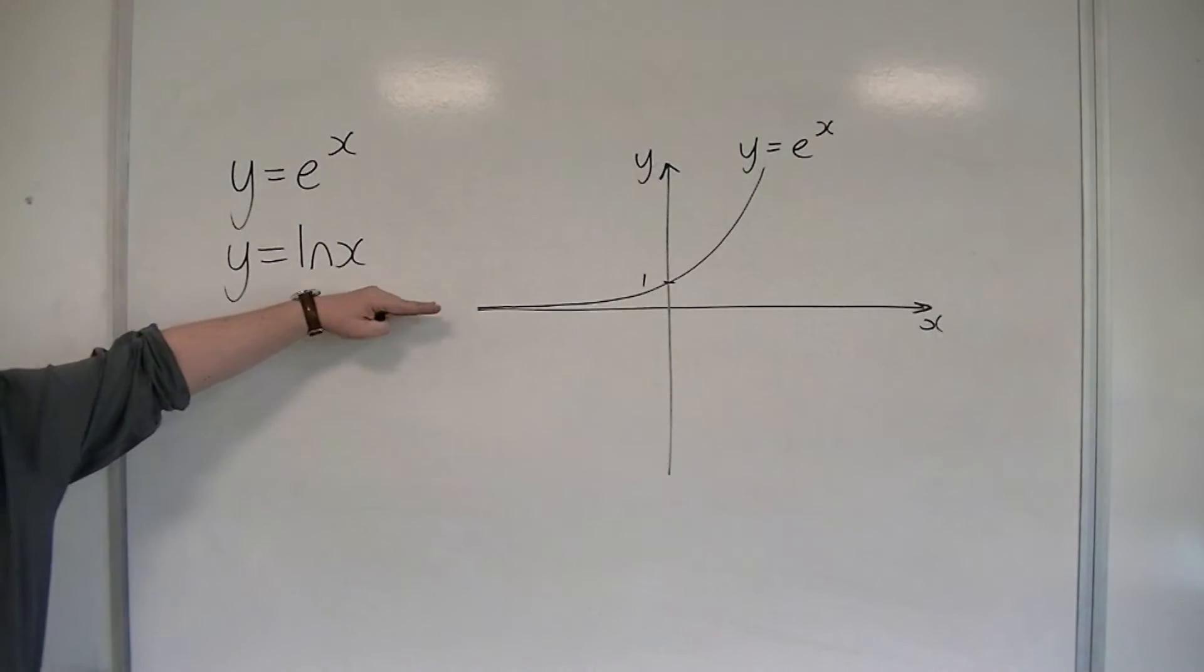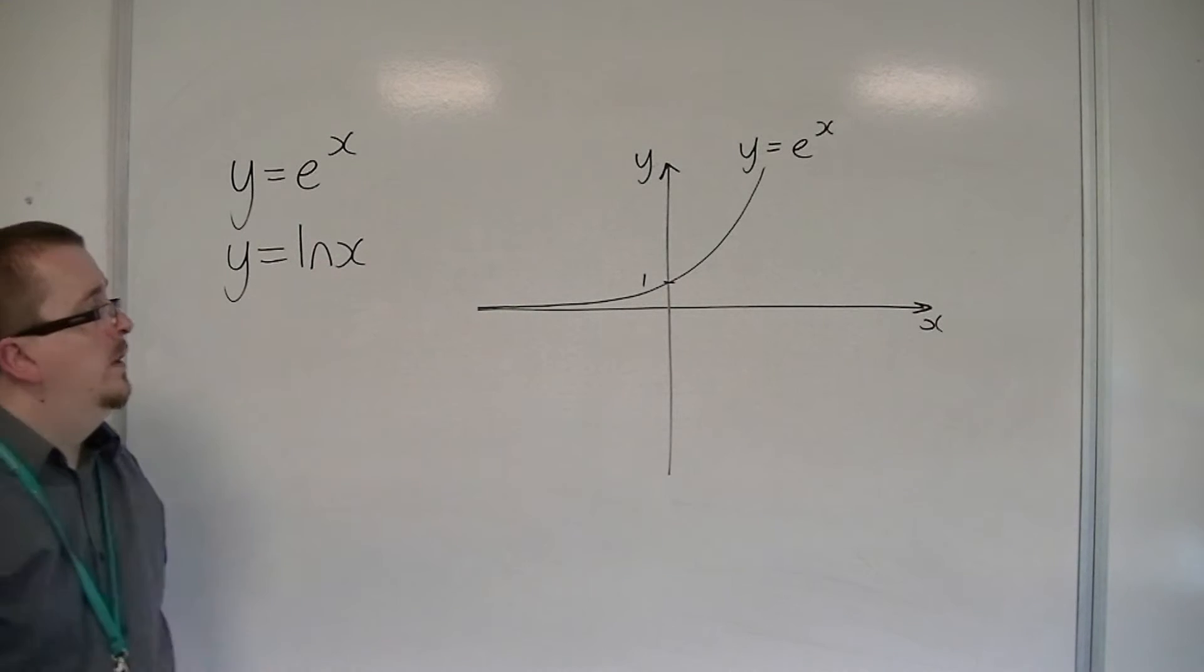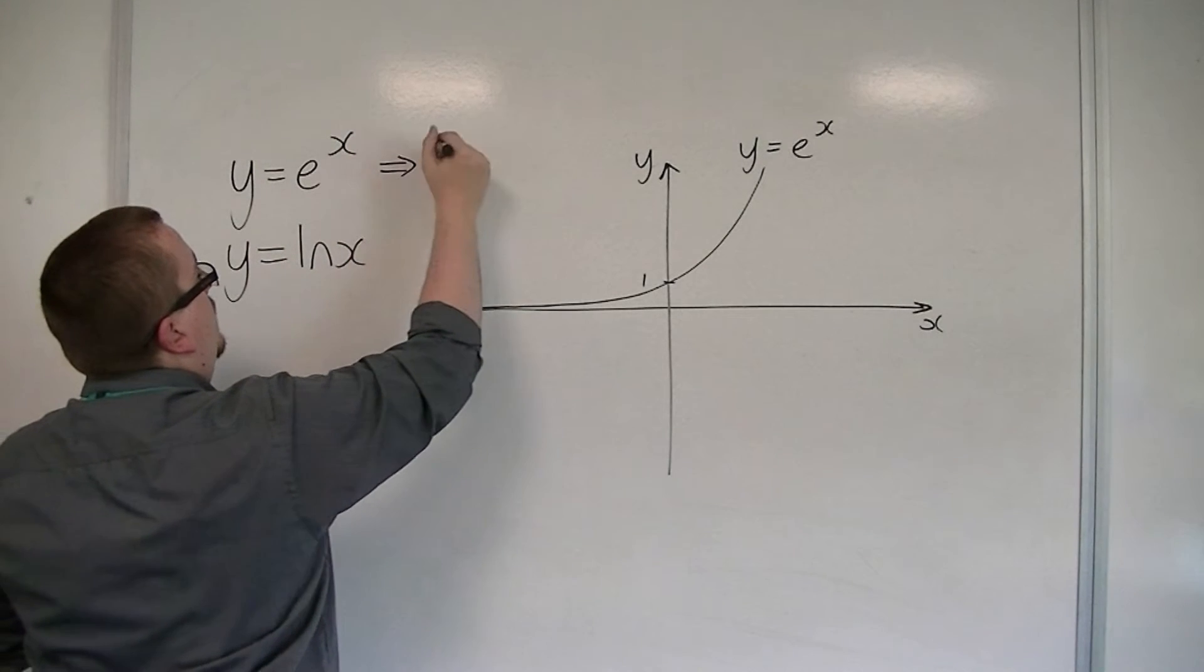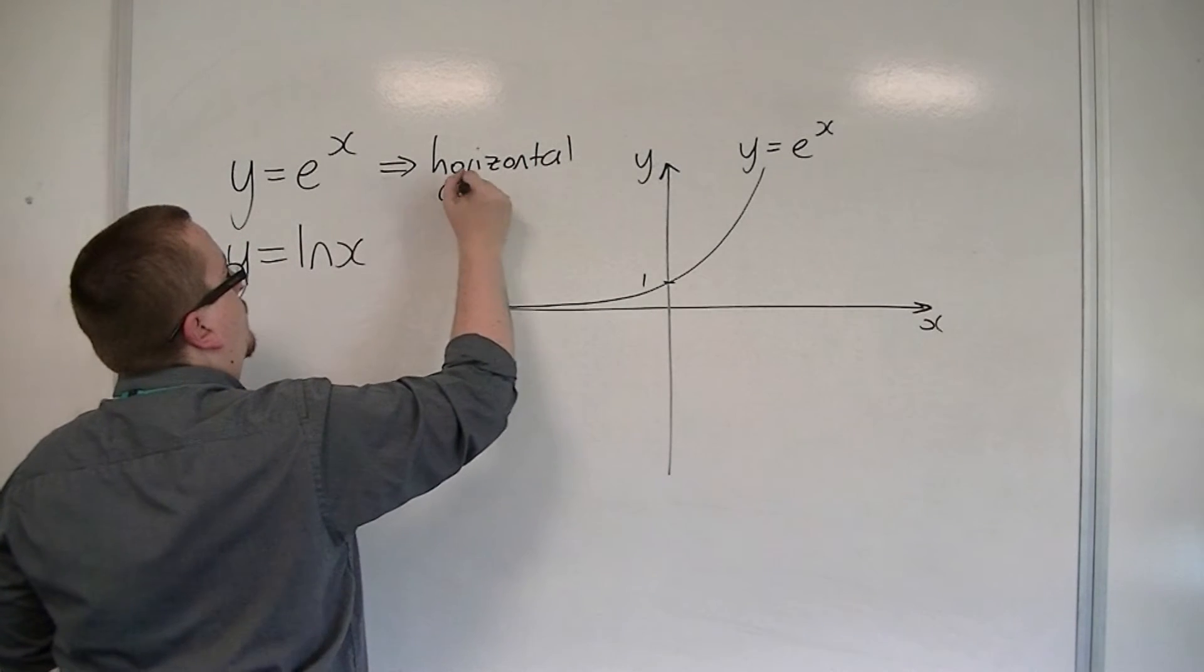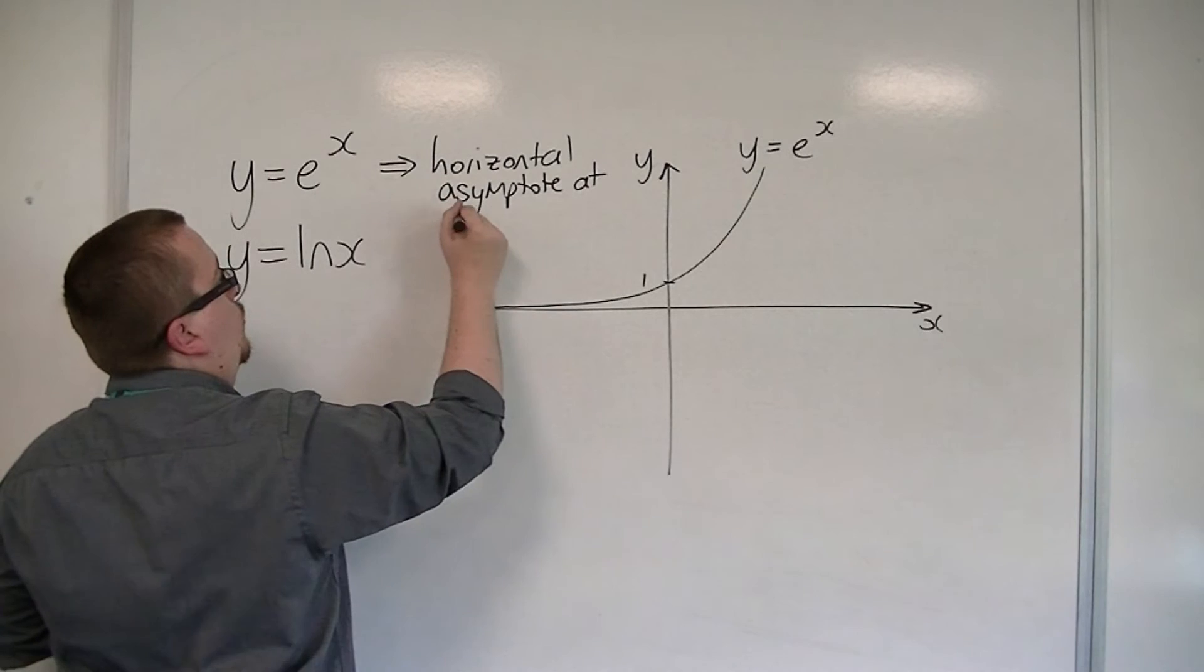It has a horizontal asymptote on the x-axis, y equals 0. So let's write that down. A horizontal asymptote at y equals 0.